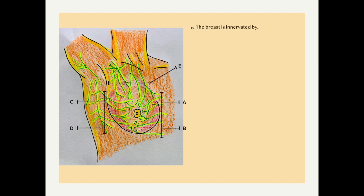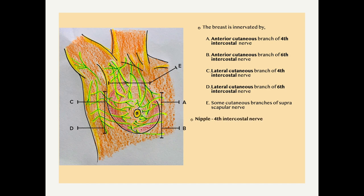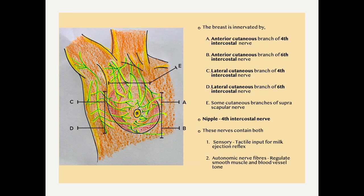The breast is innervated by anterior cutaneous branch of fourth intercostal nerve, anterior cutaneous branch of sixth intercostal nerve, lateral cutaneous branch of fourth intercostal nerve, lateral cutaneous branch of sixth intercostal nerve, and subcutaneous branches of suprascapular nerve. The nipple is supplied by the fourth intercostal nerve. These nerves contain both sensory and autonomic fibers. Sensory fibers provide tactile input for milk ejection reflex, and the autonomic nerve fibers regulate smooth muscle and blood vessel tone.